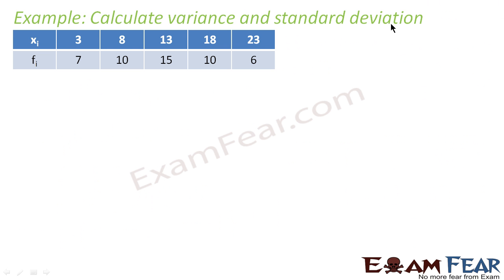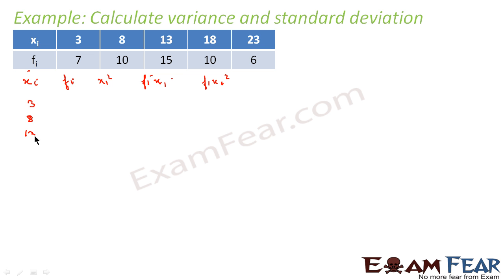Now we will take one example using this formula to find variance and standard deviation. We will use the shortcut method we just derived. We need to calculate fi, xi squared, fi·xi, and fi·xi squared. Our xi values are 3, 8, 13, 18, and 23, and frequency fi values are 7, 10, 15, 10, and 6.